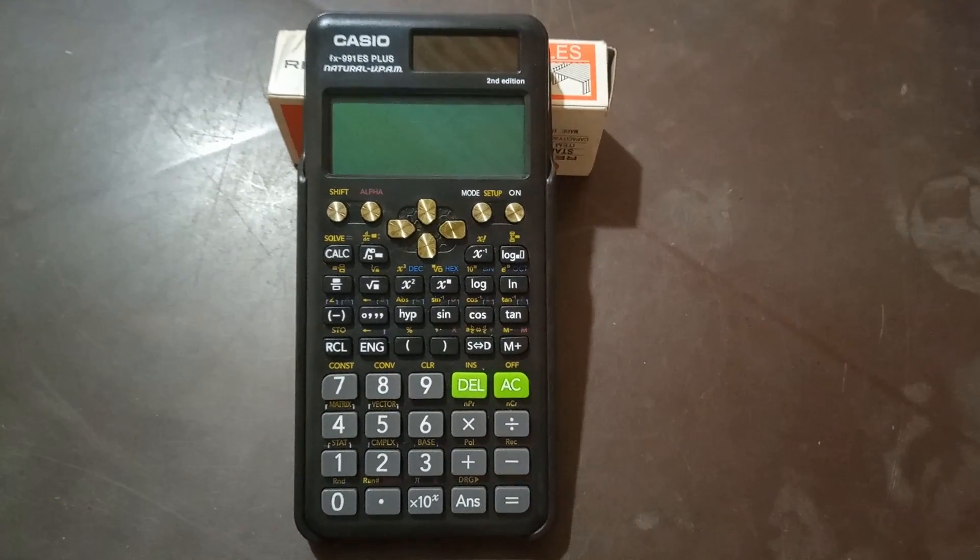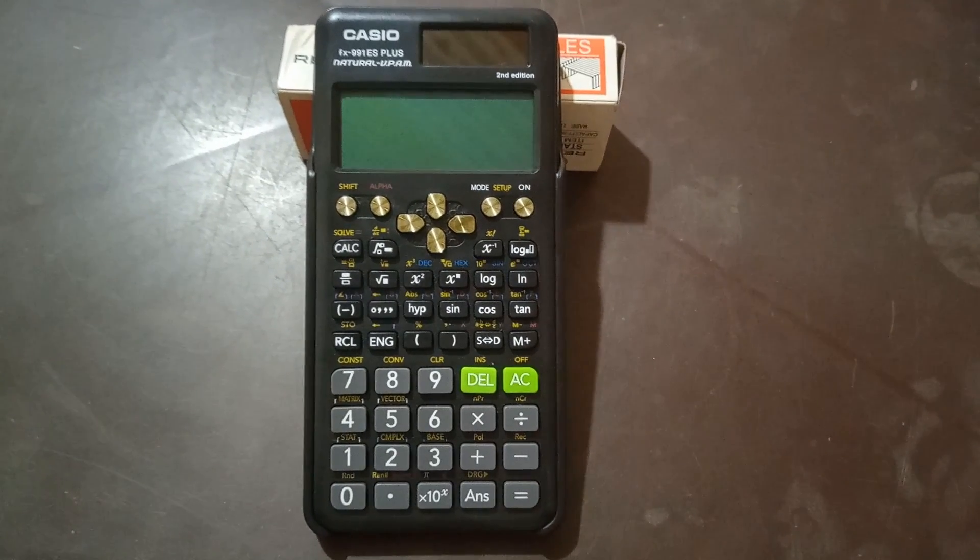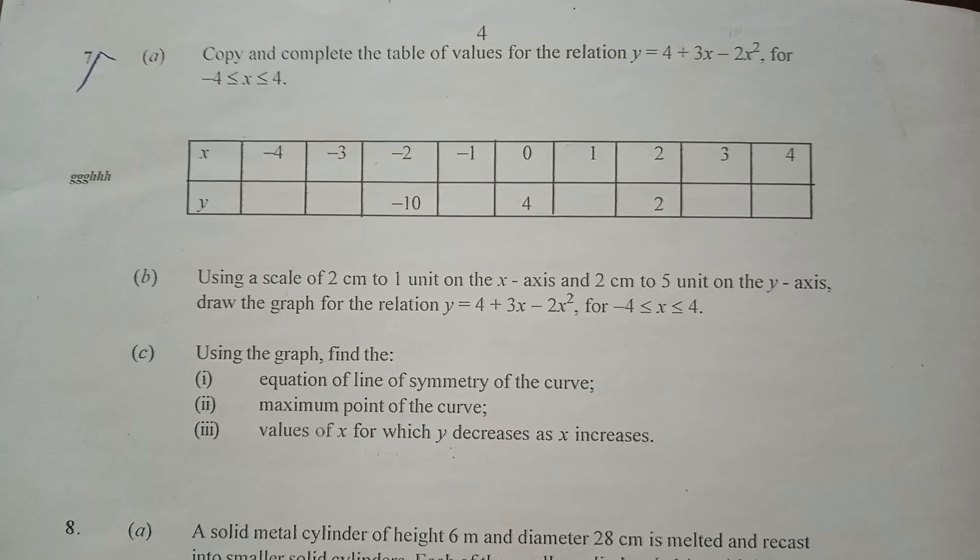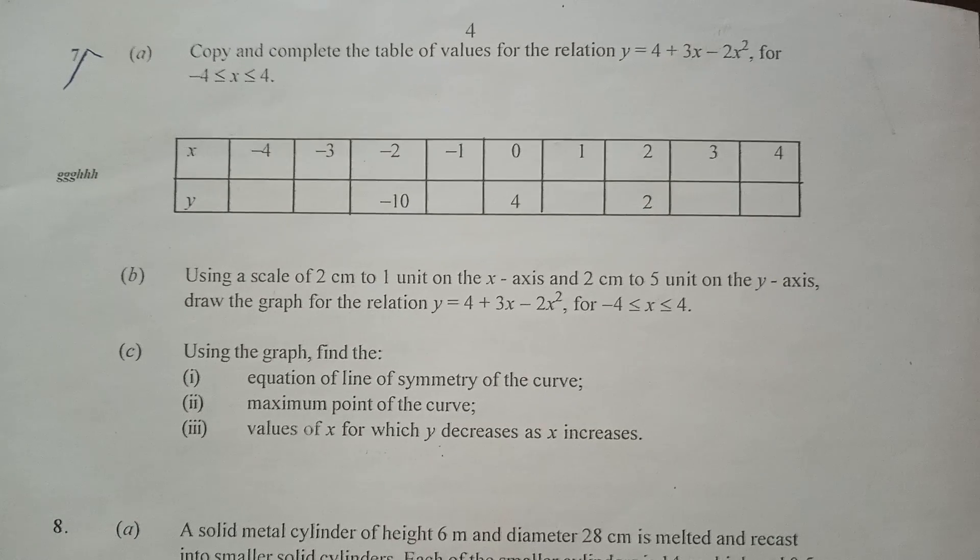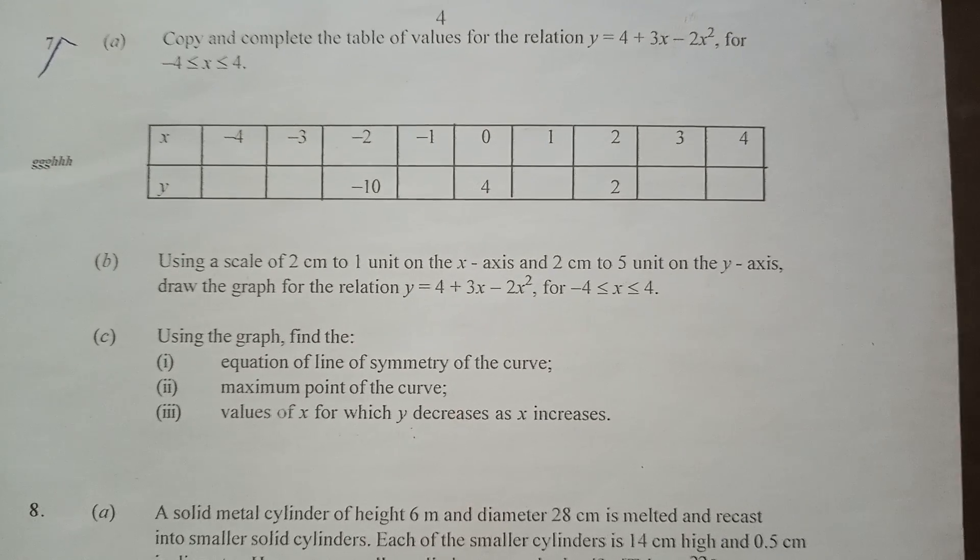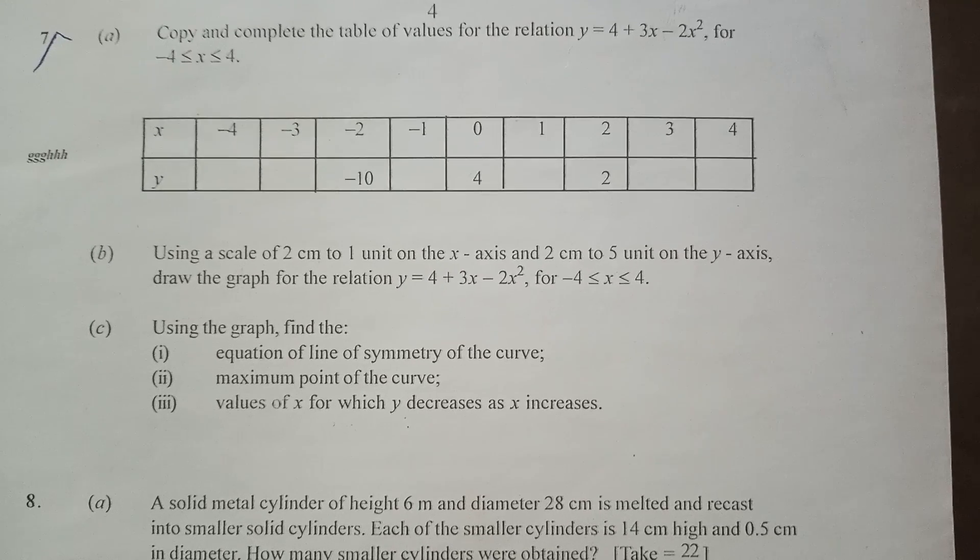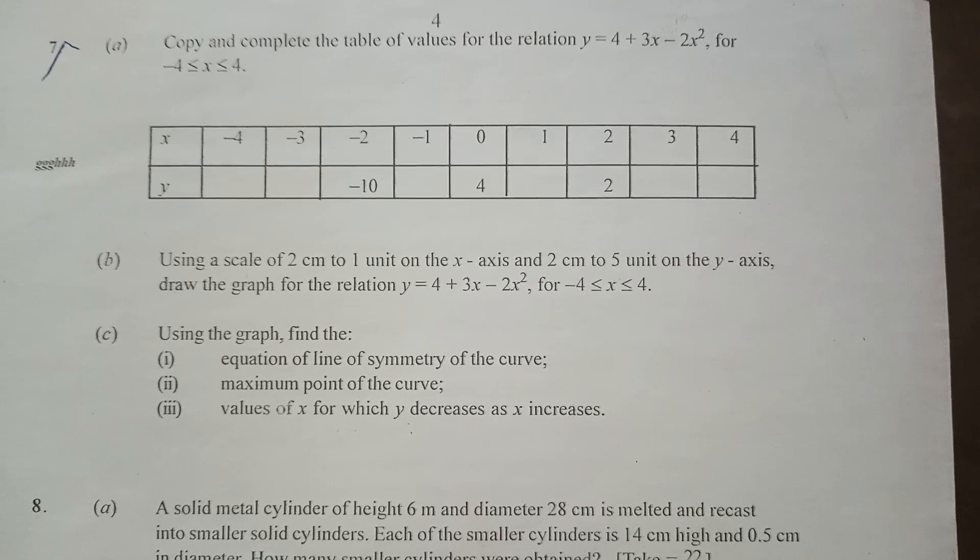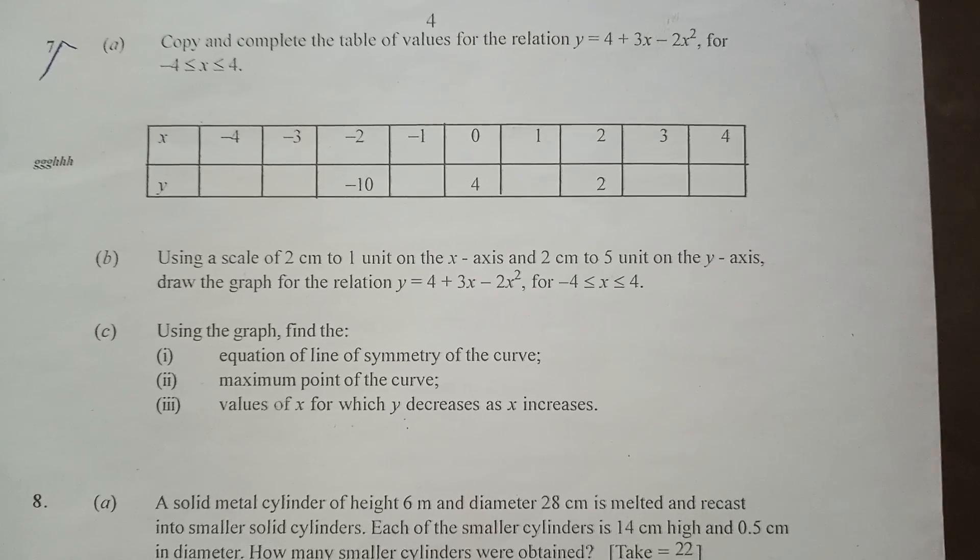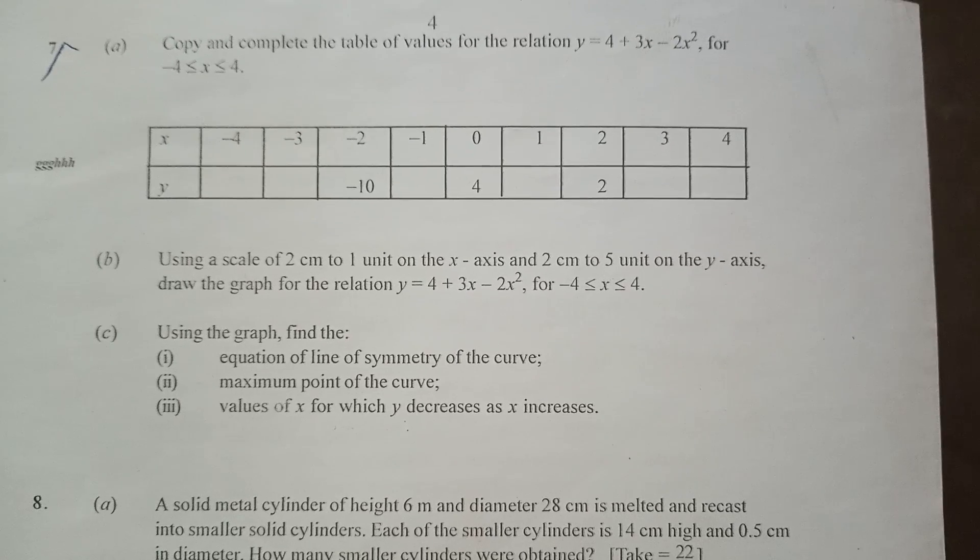We first start by using the calculator to create a table from a quadratic function. Let's take the question first. This is 1C 2021 general math paper question 7, and it says copy and complete a table of values for the relation y equals 4 plus 3x minus 2x squared for the interval negative 4 less than or equal to x less than or equal to 4. The table is there, partially filled, and you have to complete it.